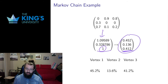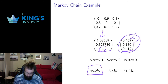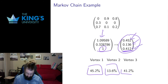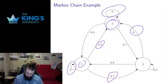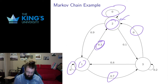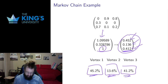This tells us that the long-term behavior is going to approach this probability vector. The long-term probability of ending up in vertex 1 is approximately 45.2%, in vertex 2 is only about 13.6%, and in vertex 3 is about 41.2%. It makes sense that the probability of vertex 2 is pretty low, because I can't stay there — there's no transmission from vertex 3, and there's only a 3% transmission from vertex 1. So the incoming probabilities to vertex 2 are actually pretty low, and in the long run it's pretty unlikely that I end up in that vertex.